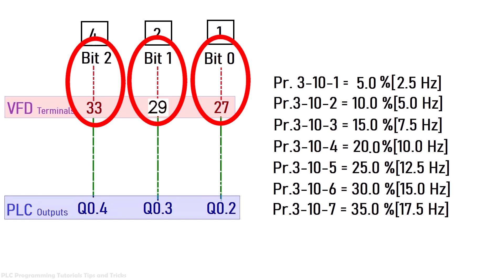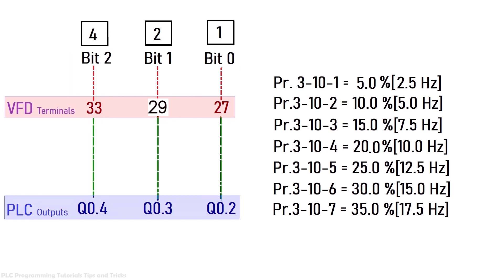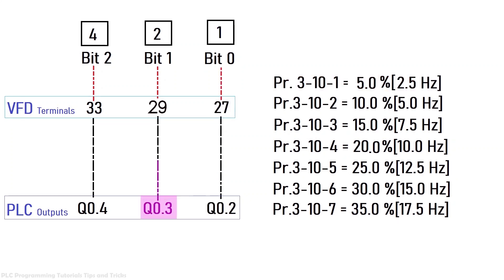As discussed, these three inputs of the VFD — 27, 29, and 33 — are the bits of a 3-bit binary number. Terminal 27 is bit 0 with value 1, terminal 29 is bit 1 with value 2, and terminal 33 is bit 2 with value 4. If we turn on only Q0.2 it activates bit 0 (value 1), loading preset frequency reference 1 — 2.5 Hz — and the motor will run at 2.5 Hz. If we turn on Q0.3 it activates bit 1 (value 2), loading preset reference 2 — 5.0 Hz.